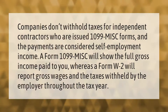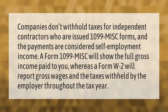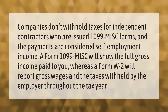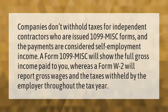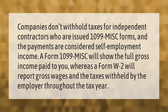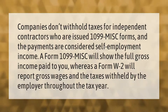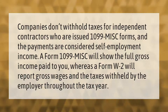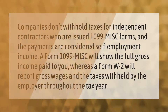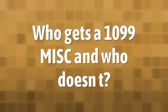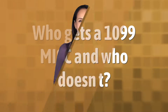Companies don't withhold taxes for independent contractors who are issued 1099-MISC forms, and the payments are considered self-employment income. A form 1099-MISC will show the full gross income paid to you, whereas a form W-2 will report gross wages and the taxes withheld by the employer throughout the tax year.